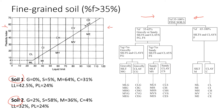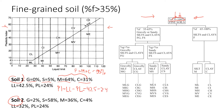Soil 1 has zero percent gravel, five percent sand, 64 percent silt, and 31 percent clay. The fines content — silt plus clay — gives us 95 percent, so we will use the flowchart for fines from 35 to 100 percent. The plasticity index is the difference between liquid limit and plastic limit: 42.5 minus 24 equals 18.5 percent.